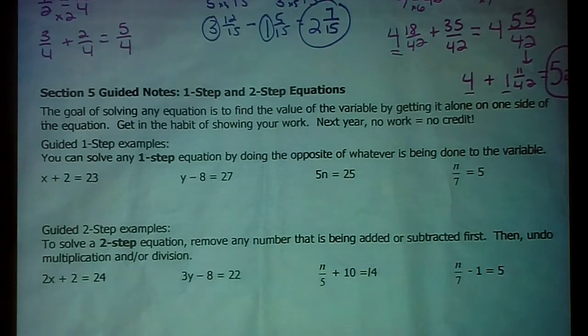Section 5 is on 1 and 2 step equations. The first thing you need to know is the goal of any equation. The goal of any equation is to figure out the value of the variable by getting it alone. So you'd like to get the variable alone on one side of the equation.